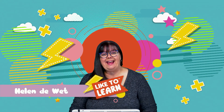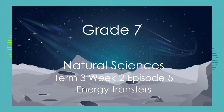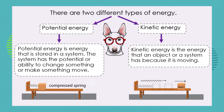Hello grade sevens, I'm Helen, and today we're looking at energy transfers. We've been doing a lot of work on the different kinds of energy: potential energy, which is our stored energy in the system, and kinetic energy, which is our movement energy. At this point you should be able to identify situations where there is potential energy and when something is moving we are seeing kinetic energy.